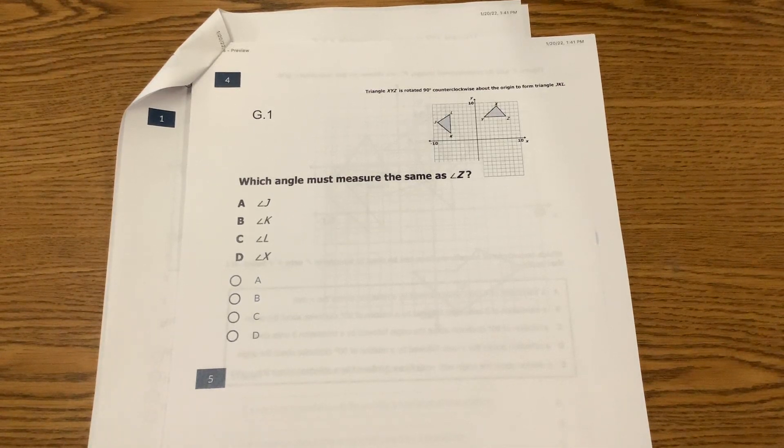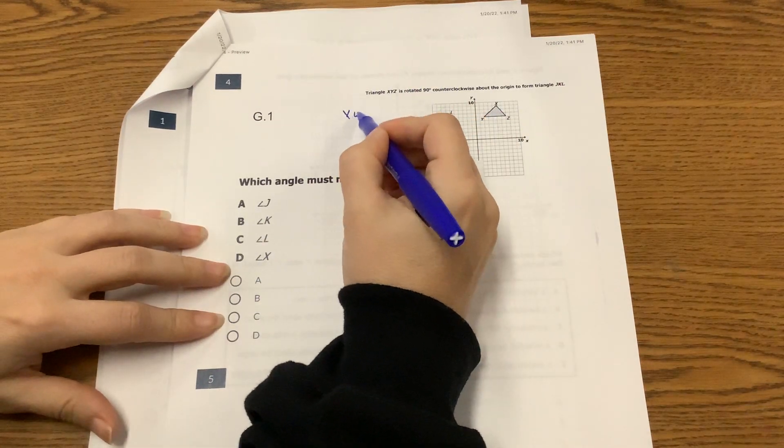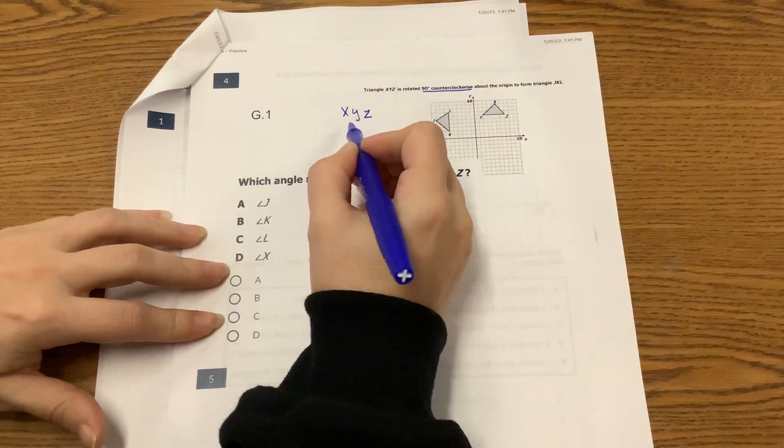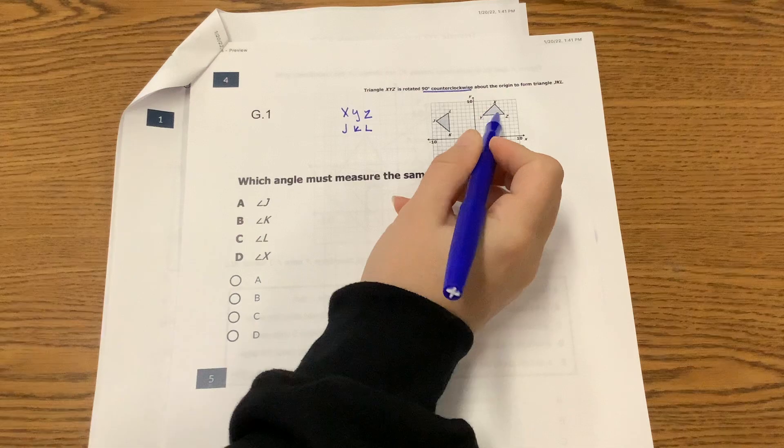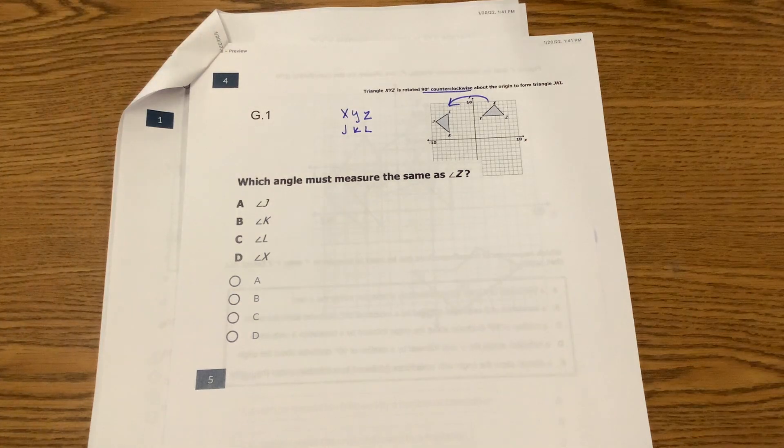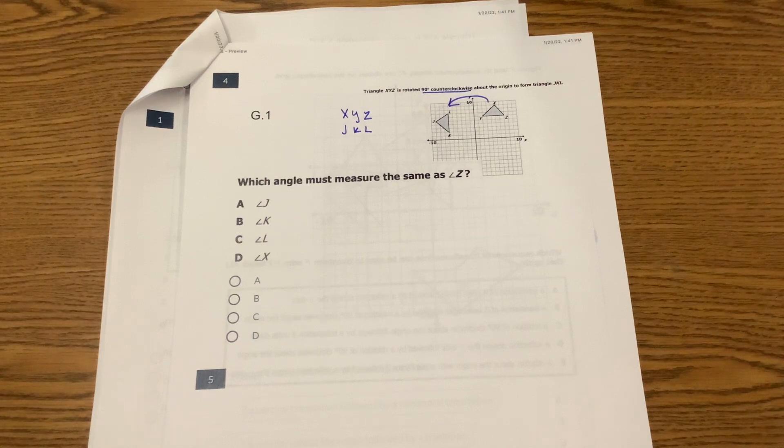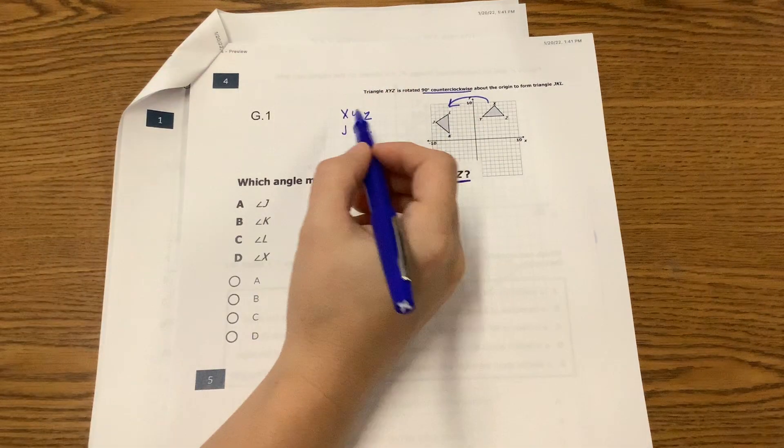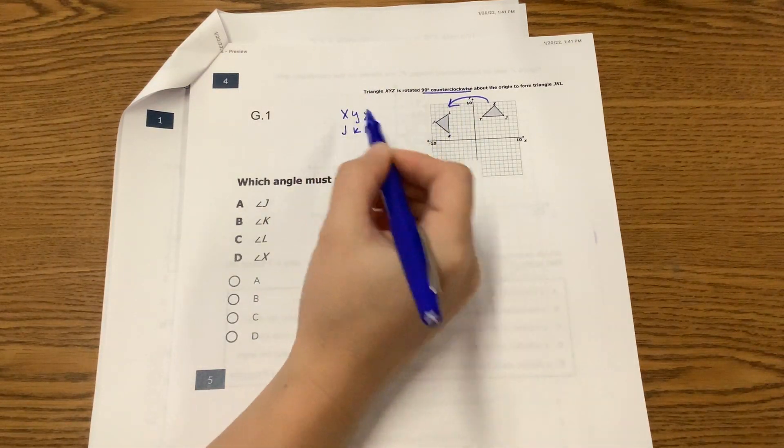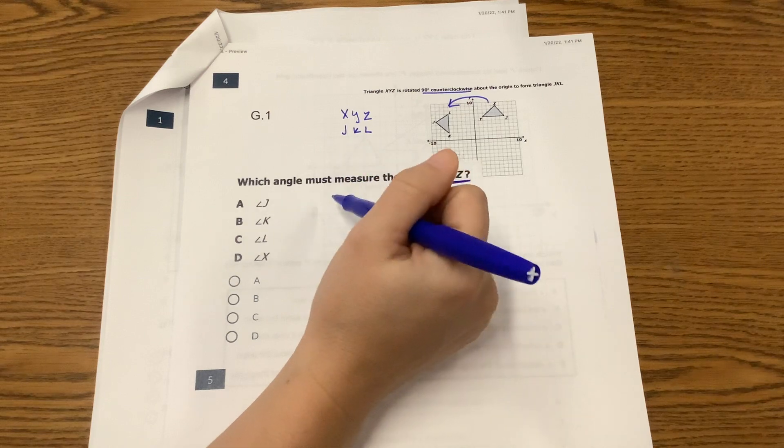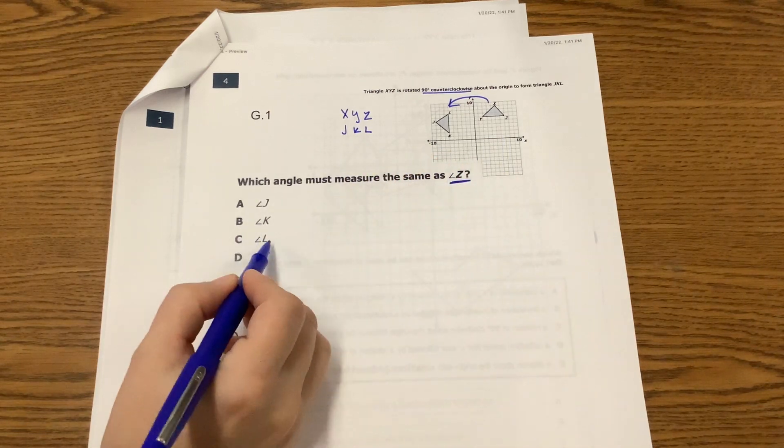Alright, so from the study guide, this one says triangle XYZ is rotated 90 degrees counterclockwise about the origin to form triangle JKL. Remember that a rotation means everything stays congruent - the angles and side lengths do not change. So which angle must measure the same as angle Z? Well, remember the way that we named these, the order does matter. XYZ: X corresponds to J, Y corresponds to K, that means Z corresponds to L. So which one must measure the same as Z? That would be angle L.